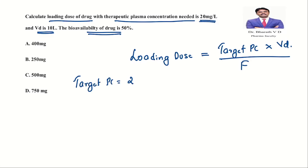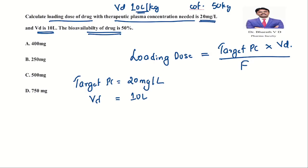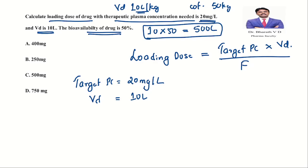Let us substitute the values. Target plasma concentration needed = 20 mg/L. Volume of distribution = 10 L. Note: sometimes Vd is given as 10 L/kg — if the patient's weight is 50 kg, multiply 10 × 50 = 500 L. Here, weight is not mentioned, so we directly take 10 L. Bioavailability is 50%.